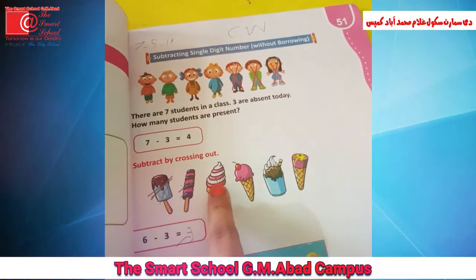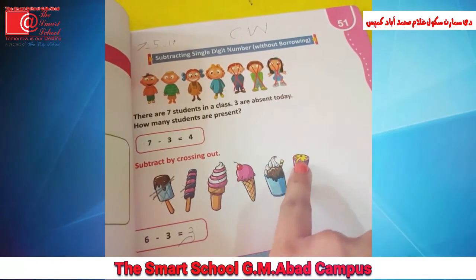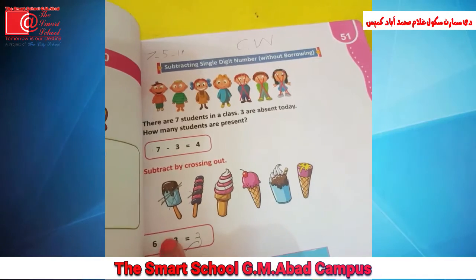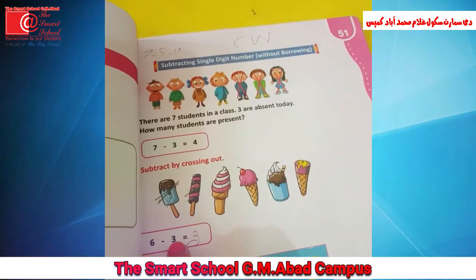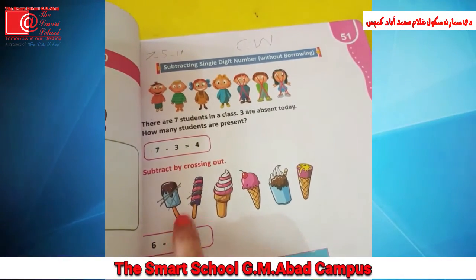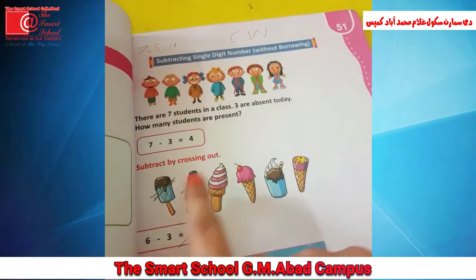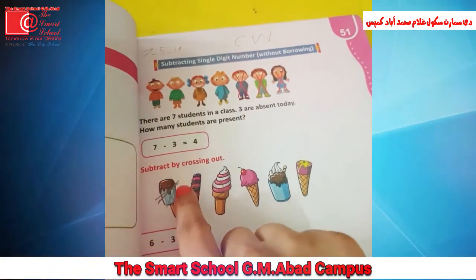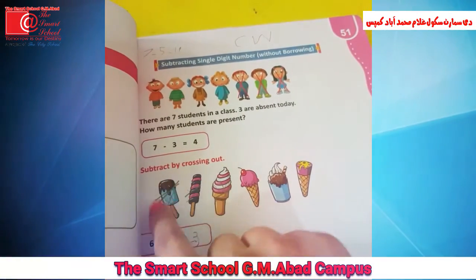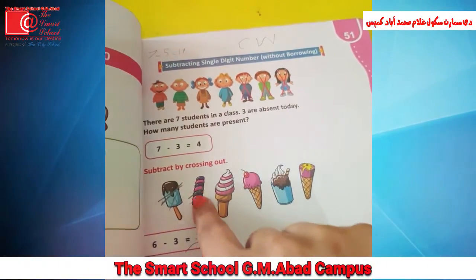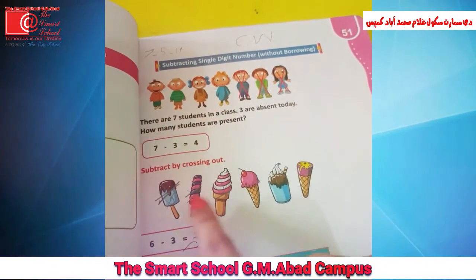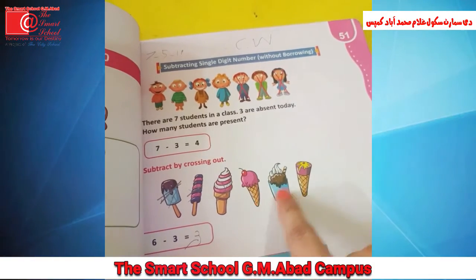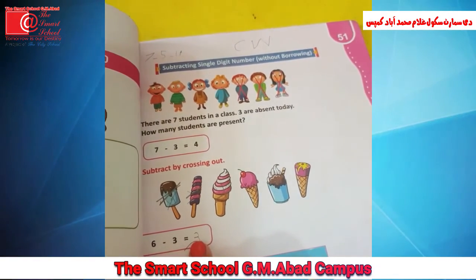Six ice creams total — one, two, three, four, five, six. हमने three को minus करना है, तो आप इस साइड से या उस साइड से, कहीं से भी three ice creams को cross out कर देंगे — one, two, three. How many left? One, two, three. Three is the answer.